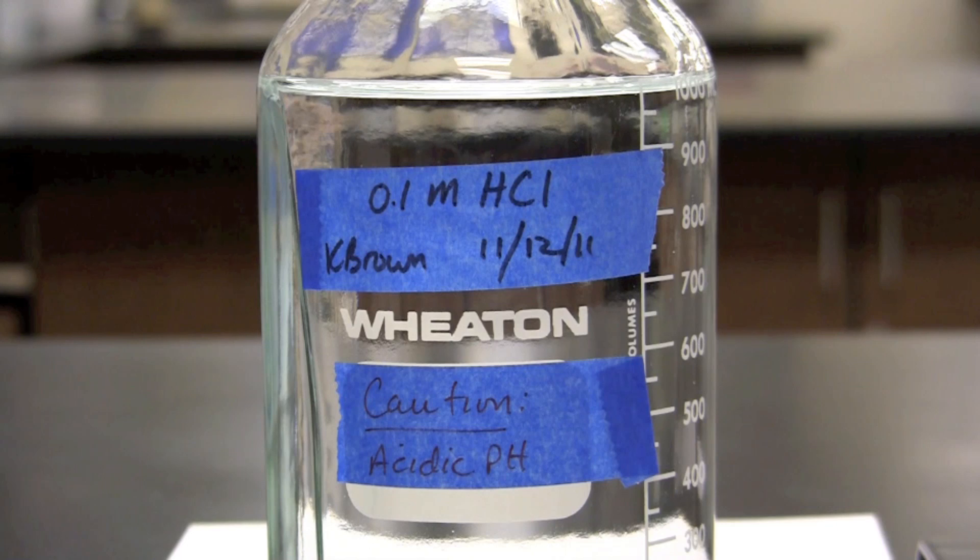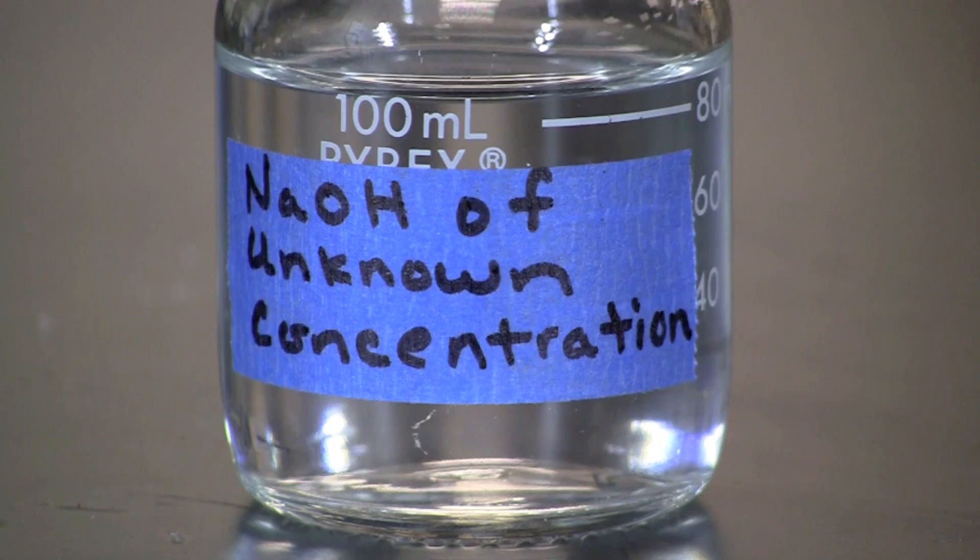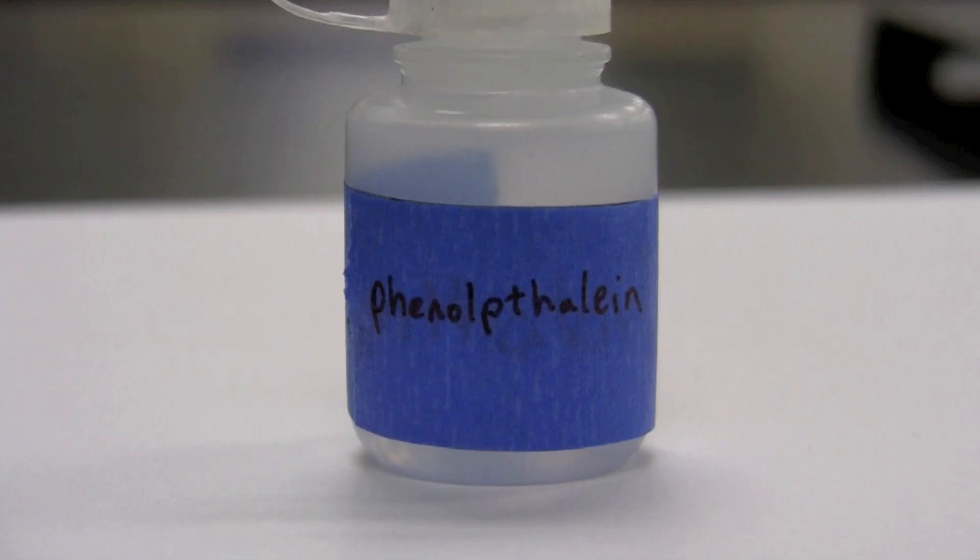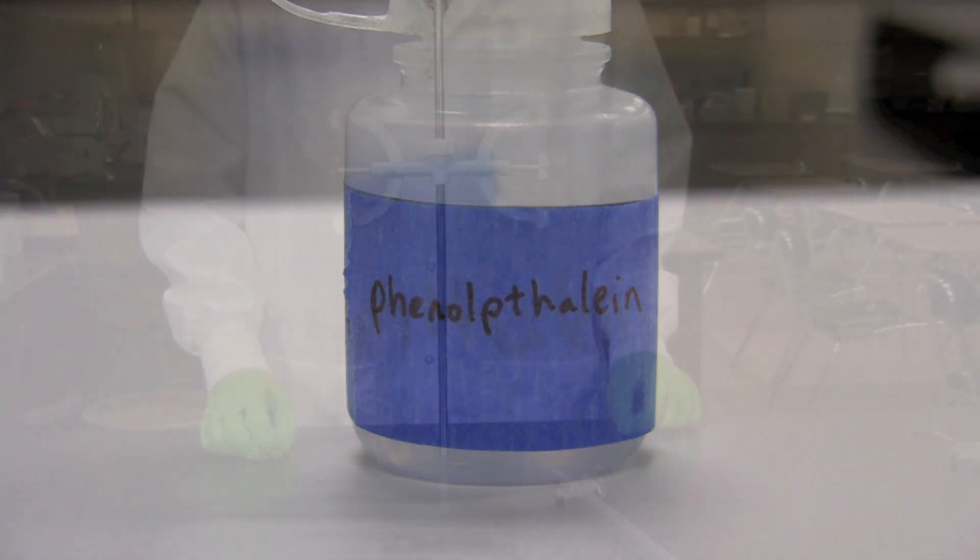For this titration we will be using 0.1 molar hydrochloric acid to determine the unknown concentration of a sodium hydroxide solution. The progression of the reaction will be determined using phenolphthalein, a pH indicator that is colorless in an acidic environment and pink in a basic environment.